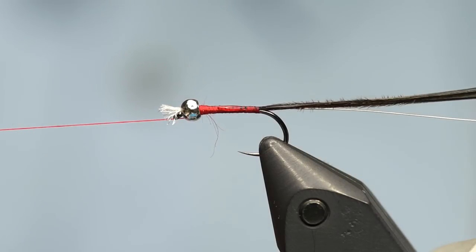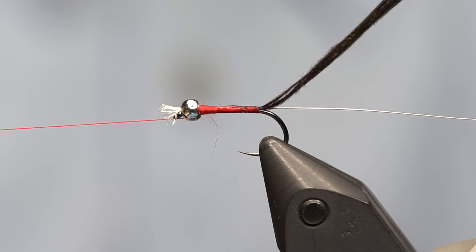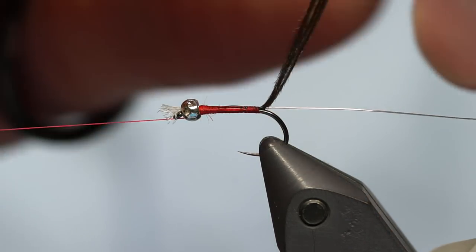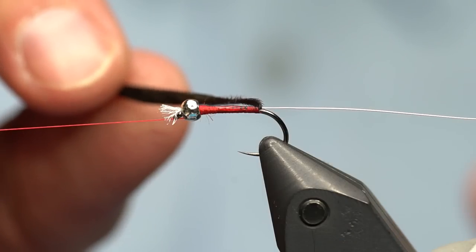This will make the pheasant tail last a lot longer. You can do it without that step, but if you've ever worked with pheasant tail, you know that it doesn't last on the hook very long. By putting a little bit of super glue in there, it will make the life of this fly much, much longer.